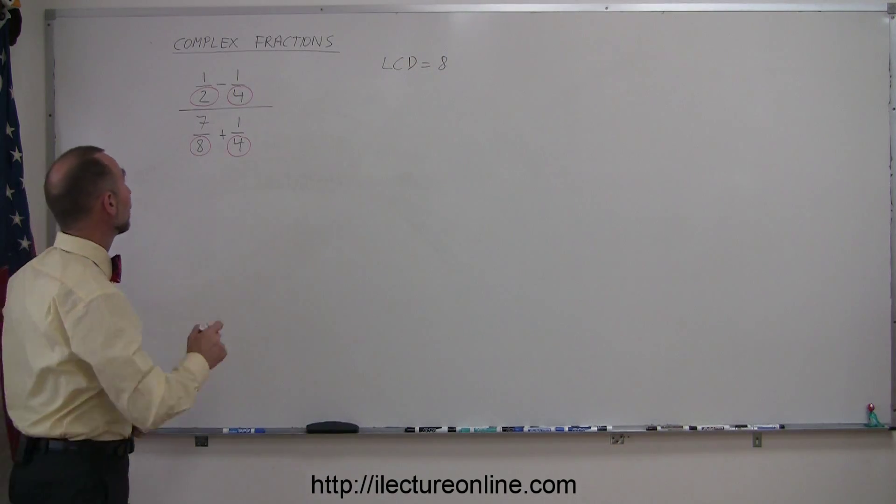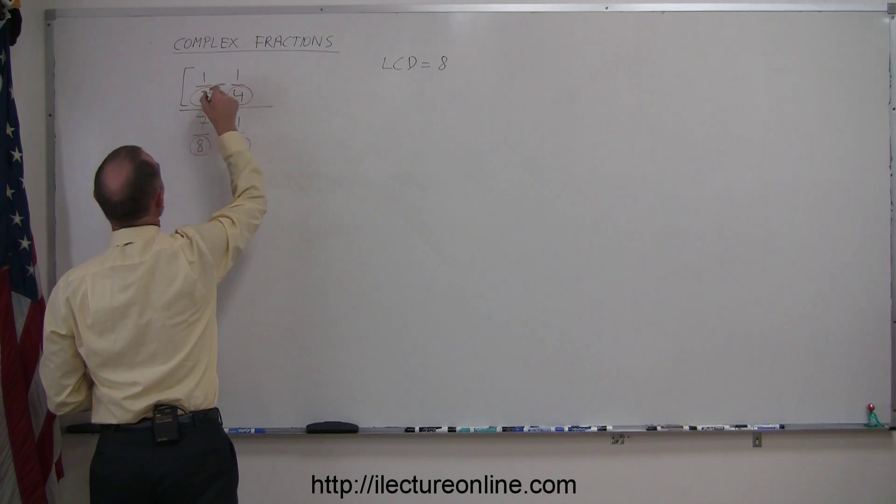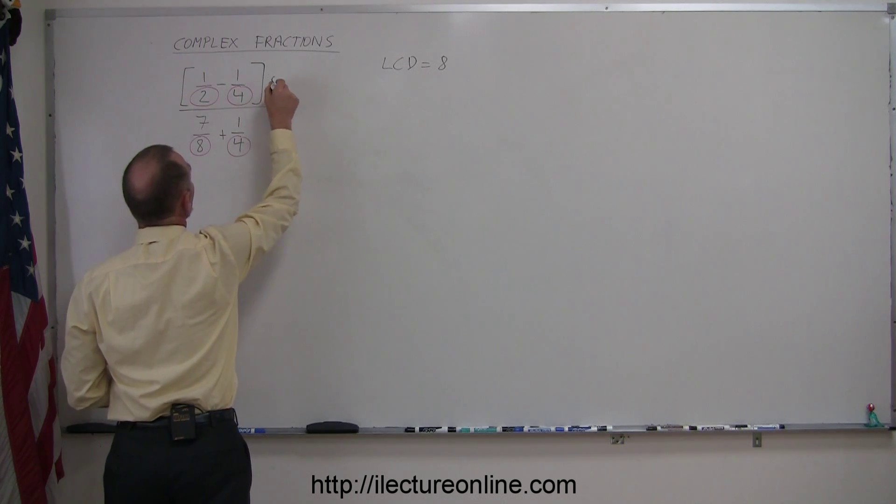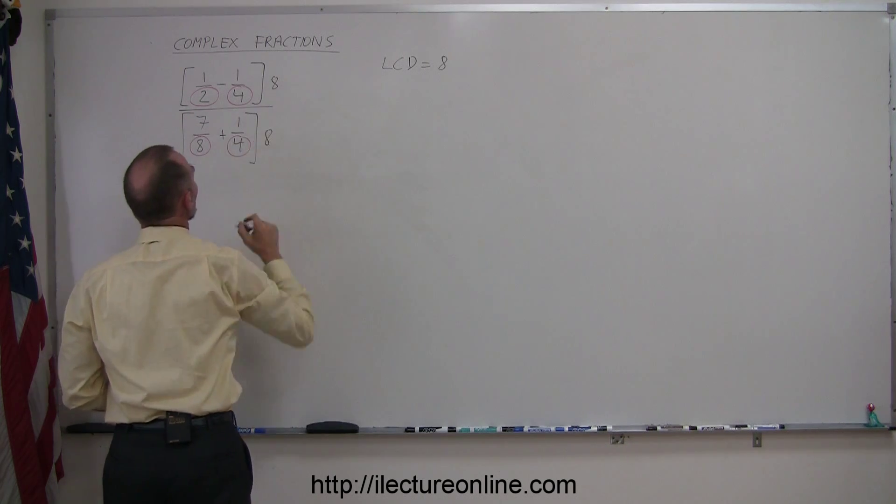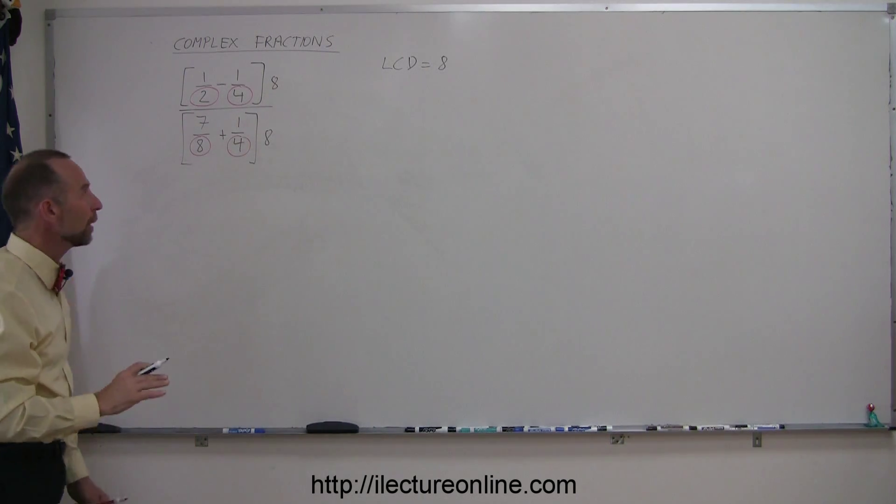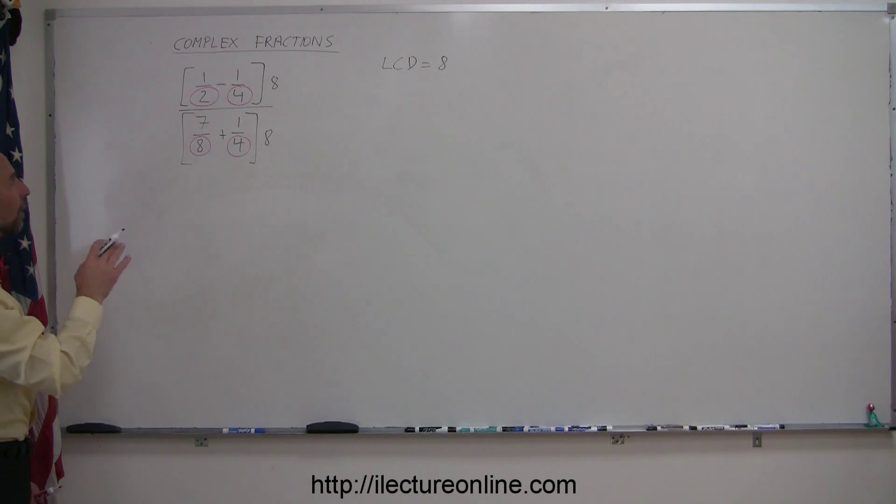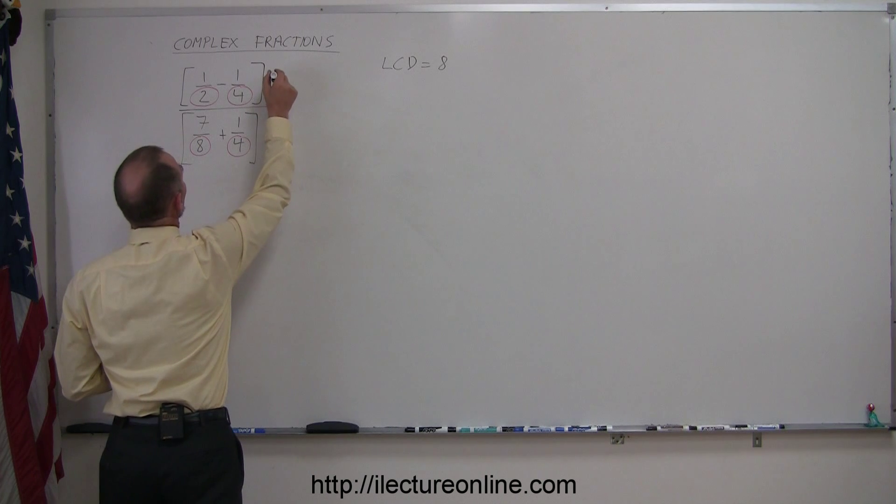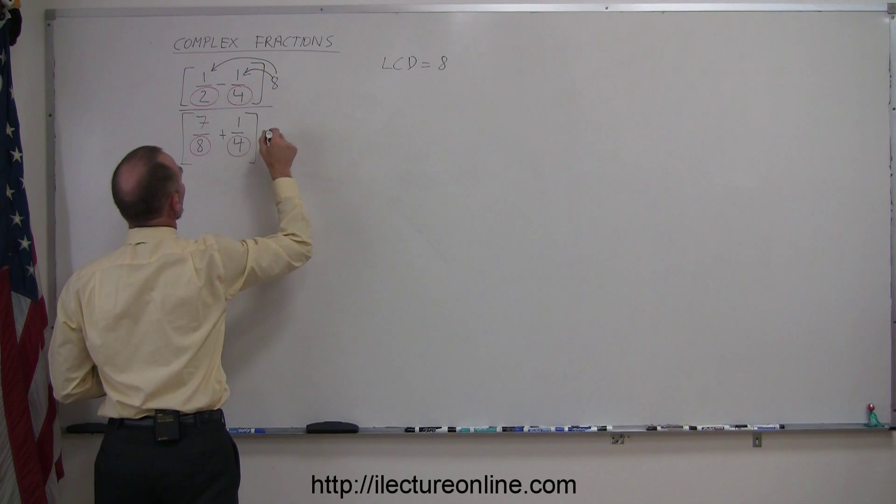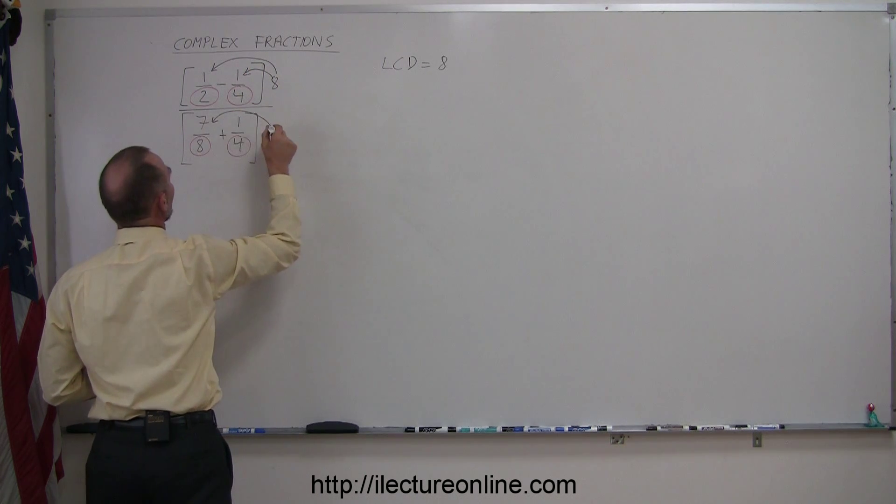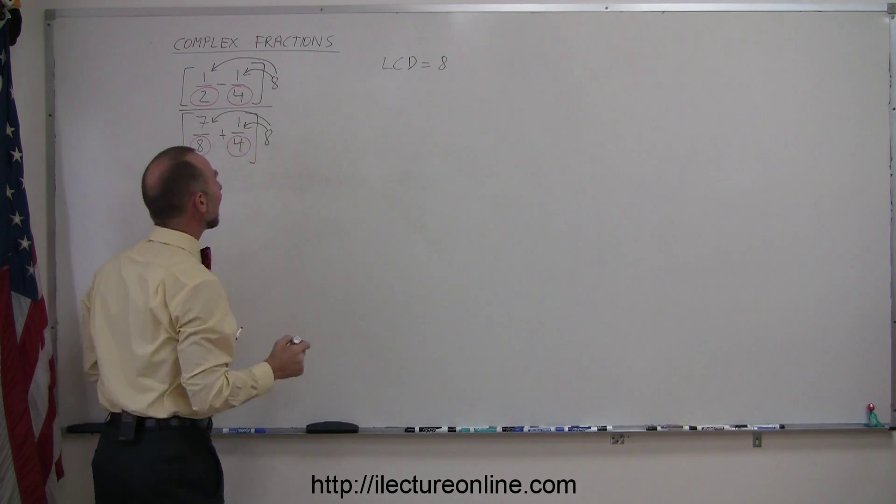And what we're going to do now is multiply the numerator of this complex fraction by the LCD, and of course whatever we do to the numerator we must do the same to the denominator. So we're going to multiply the numerator and the denominator by the lowest common denominator. Now, when I multiply this 8 times a half and this 8 times a negative 1 quarter, and over here the 8 times 7 eighths and the 8 times a quarter, what do we get?